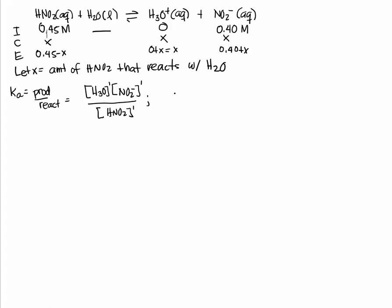Let's plug in the values. Ka is 4.5 times 10 to the negative 4. What is H3O plus at equilibrium? It's X. What is NO2 minus at equilibrium? It's 0.40 plus X. And what is HNO2 at equilibrium? It's 0.45 minus X.